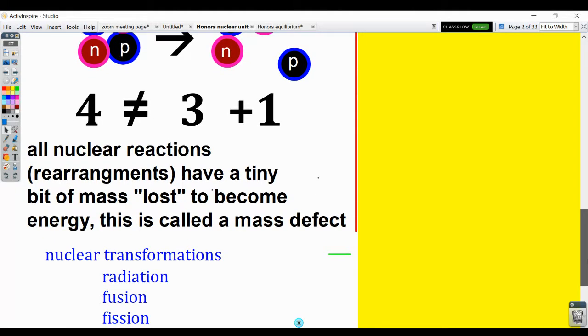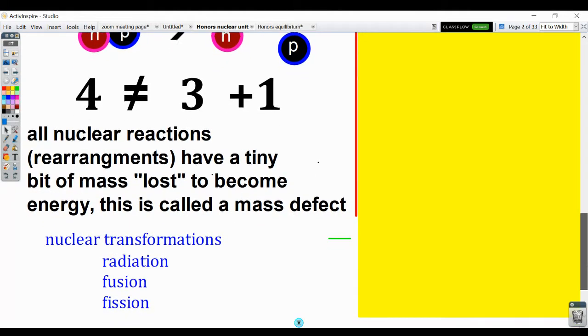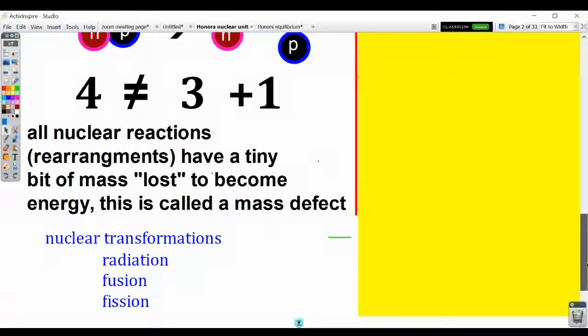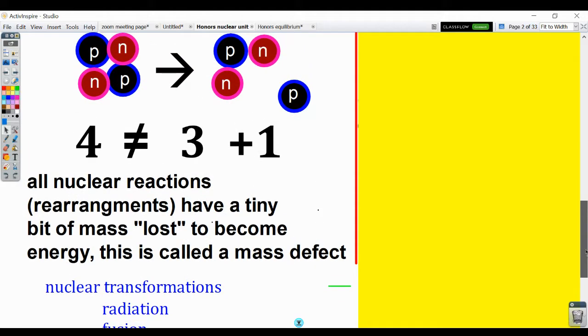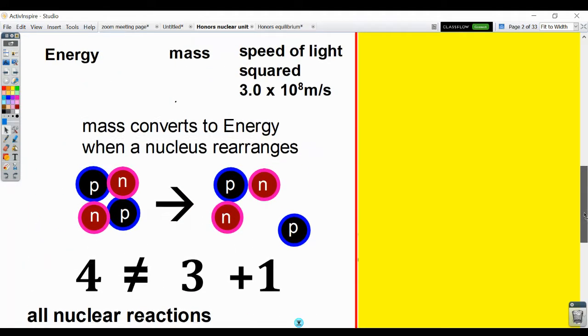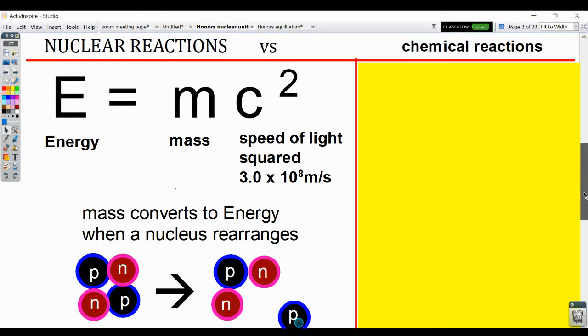In nuclear transformation, such as radiation or radioactivity, fusion and fission, there will be a small amount of mass lost, and that's converted to energy. If we go back up and take a look at Einstein's famous equation here, we see that that small amount of mass is multiplied by a very large number squared. And so it does not take much conversion of mass to create or generate a large amount of energy.